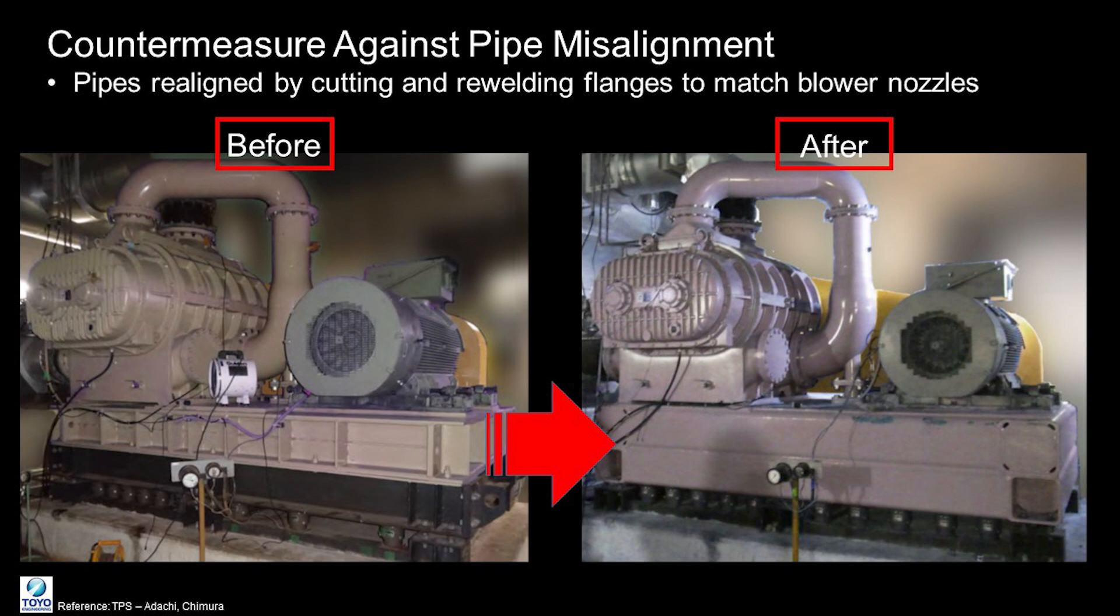To resolve this issue, the pipes were realigned by cutting and re-welding them to ensure the pipe flanges match the blower nozzles. This step was taken with the base plate replacement to address both issues.